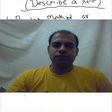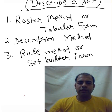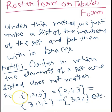These are the three methods we are going to discuss: the roster method, the description method, and the rule method or set builder form. In the roster form or tabular form, we basically put all the elements of a set in curly braces and make sure that no element is repeated. This is the mostly used form.